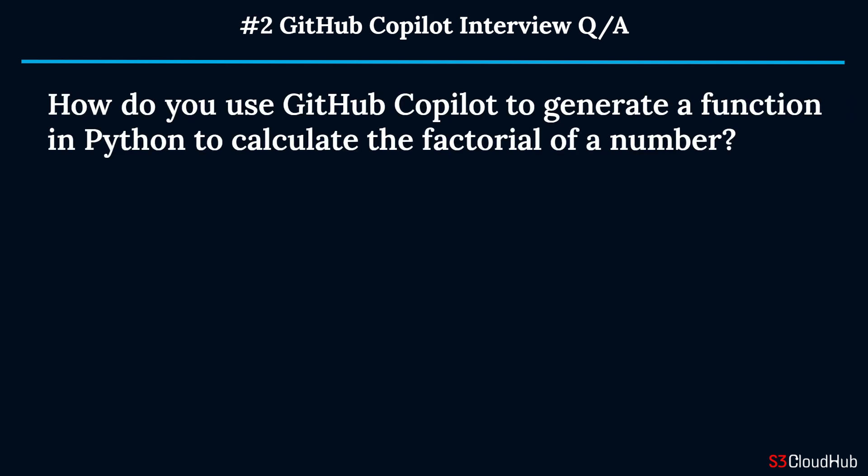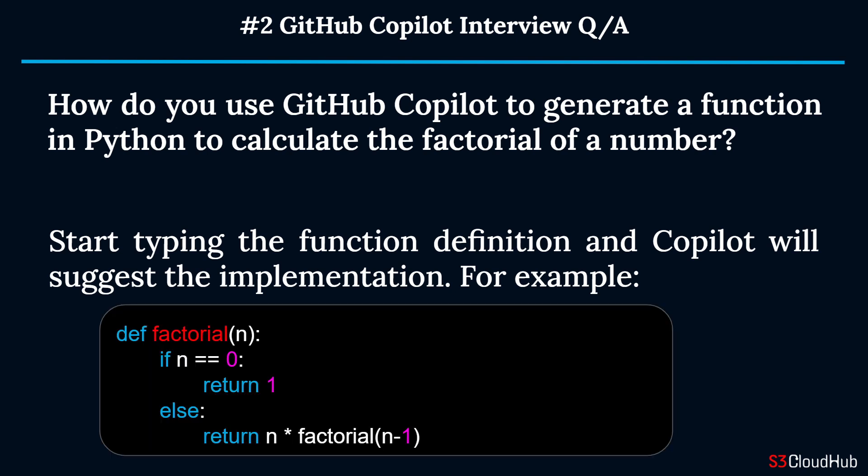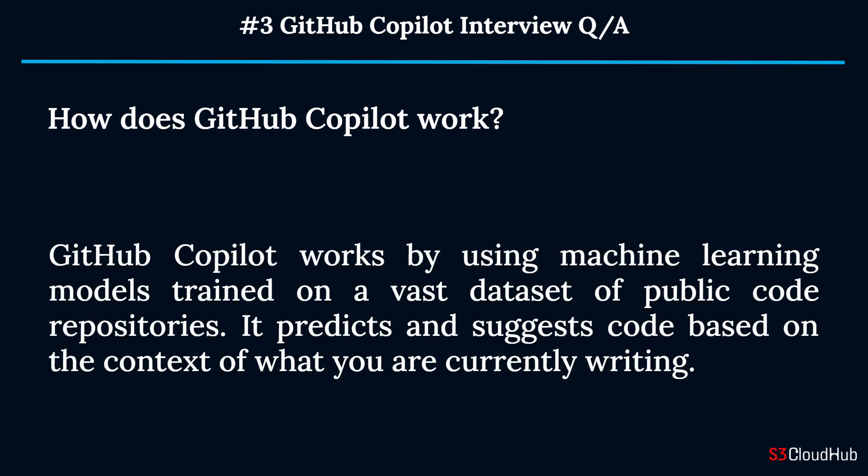Question two: How do you use GitHub Copilot to generate a function in Python to calculate the factorial of a number? Start typing the function definition and Copilot will suggest the implementation. Question three: How does GitHub Copilot work? GitHub Copilot works by using machine learning models trained on a vast dataset of public code repositories.